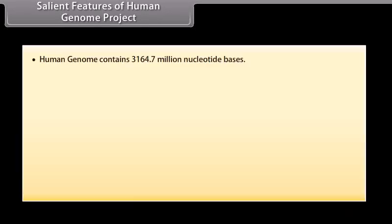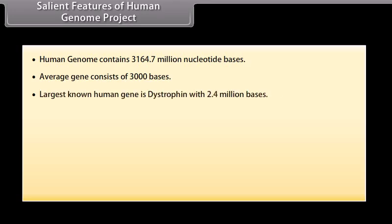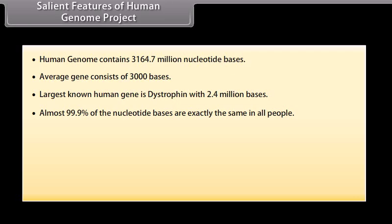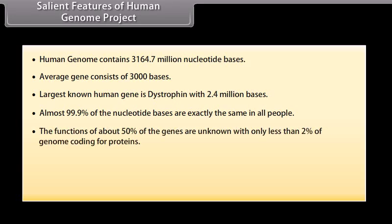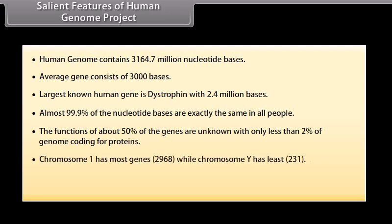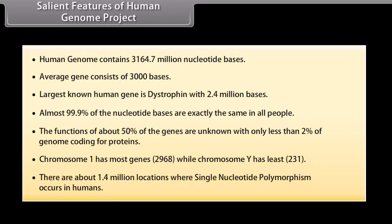Salient Features of the Human Genome Project. The human genome contains 3164.7 million nucleotide bases. Every gene consists of 3000 bases on average. The largest known human gene is dystrophin with 2.4 million bases. Almost 99.9% of nucleotide bases are exactly the same in all people. The functions of about 50% of genes are unknown, with only less than 2% of the genome coding for proteins. Chromosome 1 has the most genes (2,968) while Chromosome Y has the least (231). There are about 1.4 million locations where single nucleotide polymorphism occurs in humans.